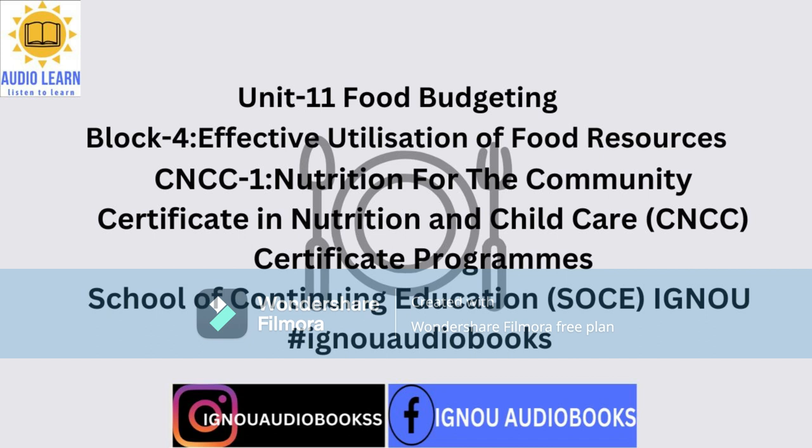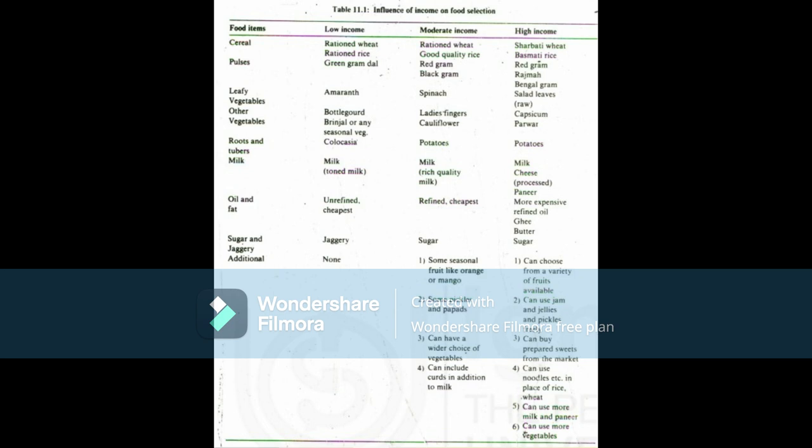This major difference in food expenditure is not as much because of the actual quantity of food consumed as it is because of the difference in the quality and variety of foods consumed (see Table 11.1). This is because there is a limit to which a person can eat and yet remain healthy, but a rich person has access to a great variety of foods and food products of superior quality. Table 11.1 illustrates the influence of income on food selection.